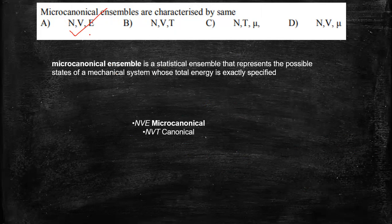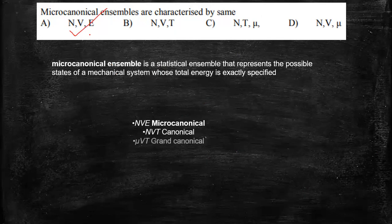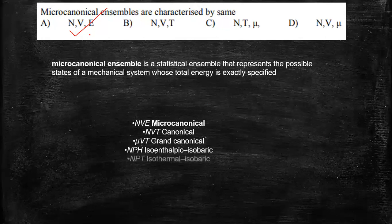There should be a thermodynamic temperature equilibria. Then mu, V, T. Then we have N, P, H. Then we have N, P, T. So this is grand canonical, iso-enthalpic isobaric and isothermal isobaric. So I want you people to memorize this right now.